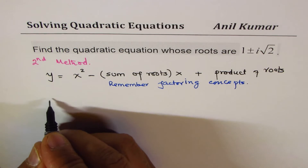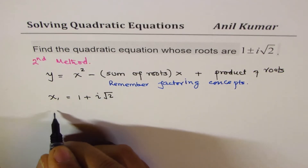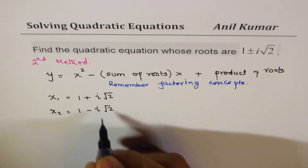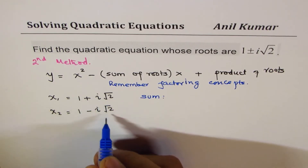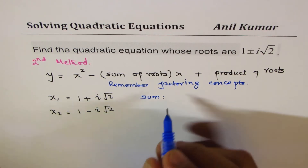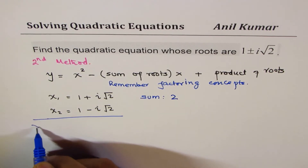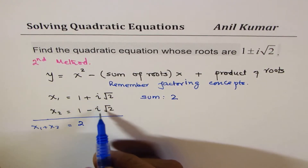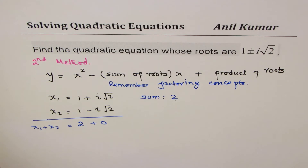In our case, x1 = 1 + i√2 and x2 = 1 − i√2. When we add them, the imaginary parts cancel out, so the sum x1 + x2 = 1 + 1 = 2.